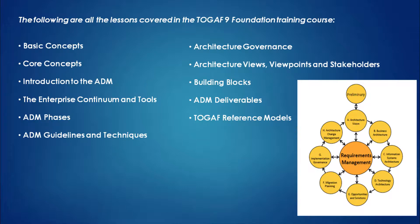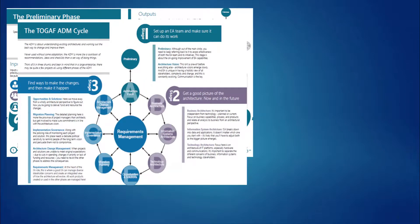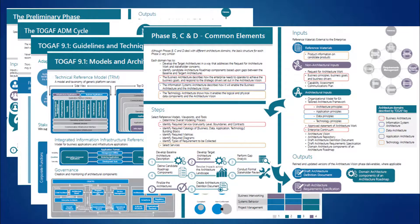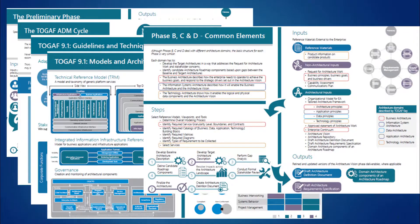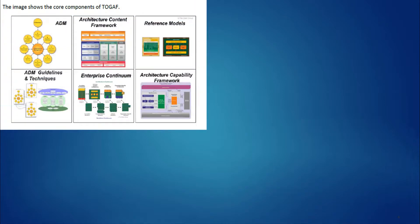The diagram on the right-hand side shows the chosen diagram by the Open Group for TOGAF, and we will discuss it in detail inside the course. I will be showing you some posters which will make it easy to remember concepts — including the preliminary phase, the TOGAF ADM life cycle, the guidelines and techniques, the model and architecture, phases BCD, common elements, and governance. I will also discuss the ADM architecture content framework, the reference model, ADM guidelines and techniques, enterprise continuum, and architecture capability framework.